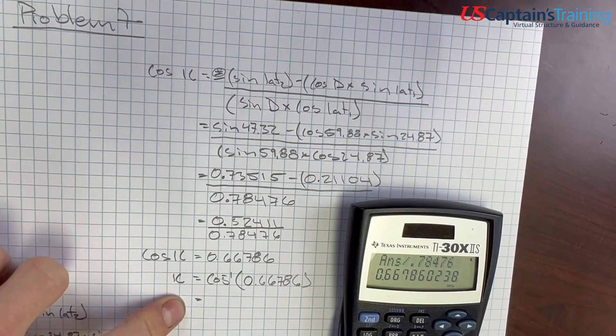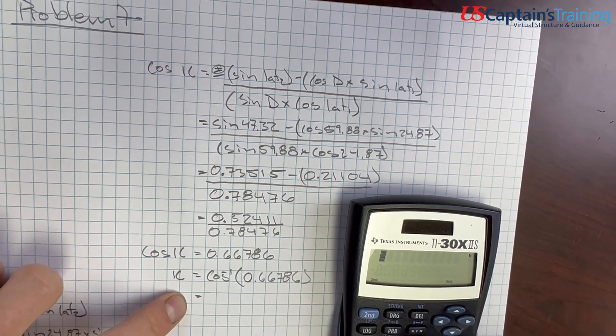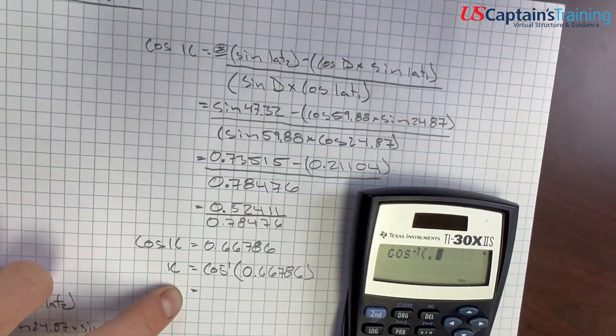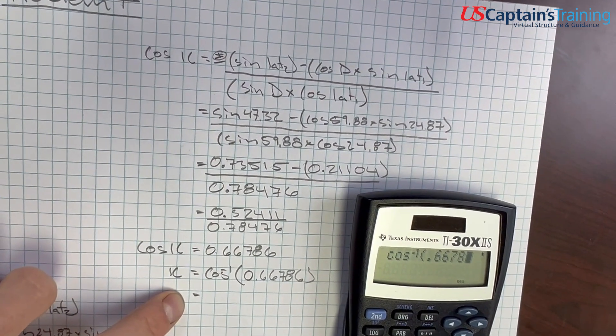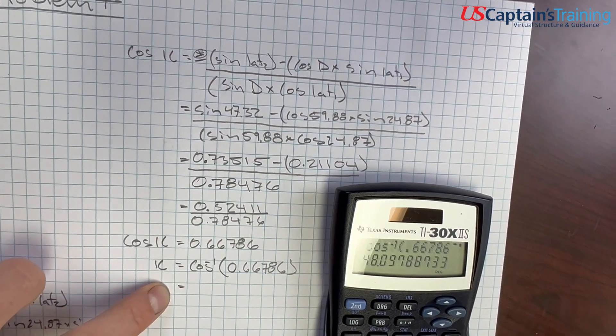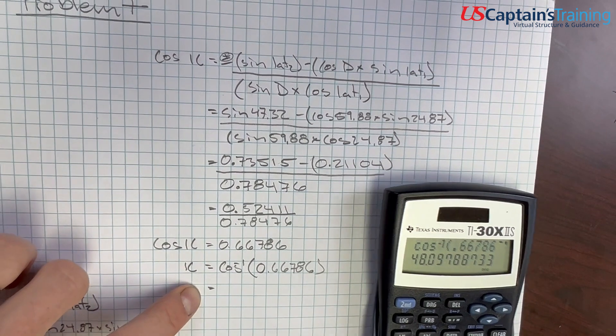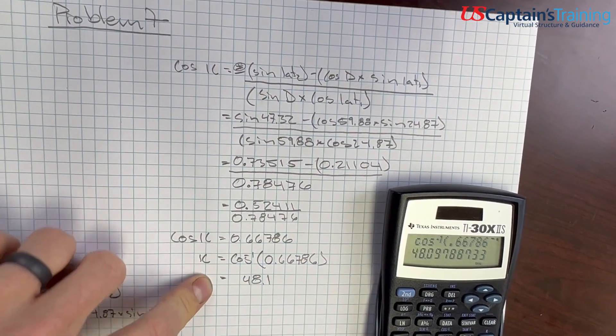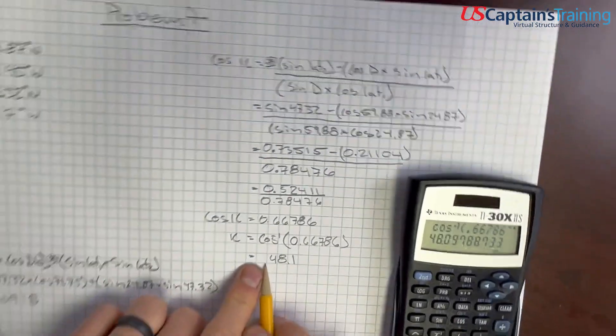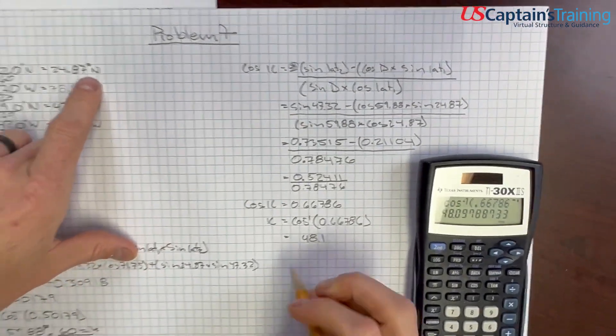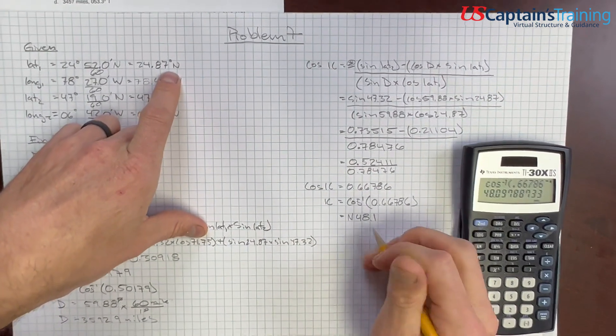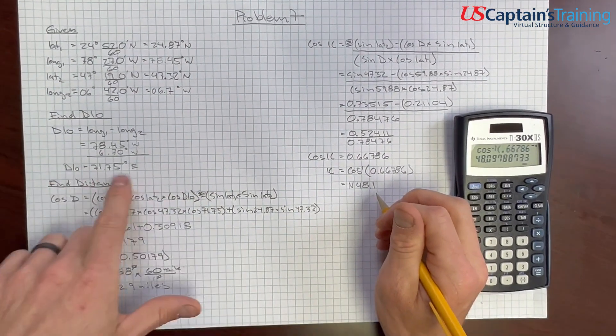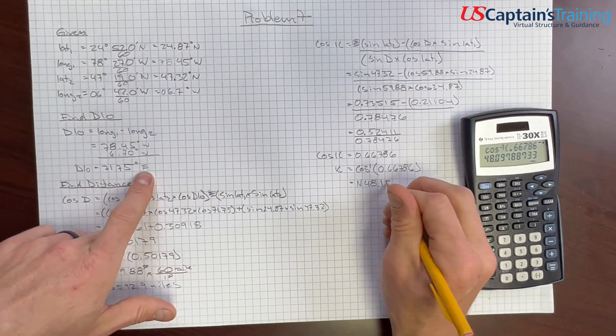It's going to come out in quadrantal notation. Second, cosine 0.66786 equals 48.1. We have 48.1, but it's in quadrantal notation. We have to name it. North or south based on lat 1 - we are north. And east or west based on D low. D low is east. We're northeast.